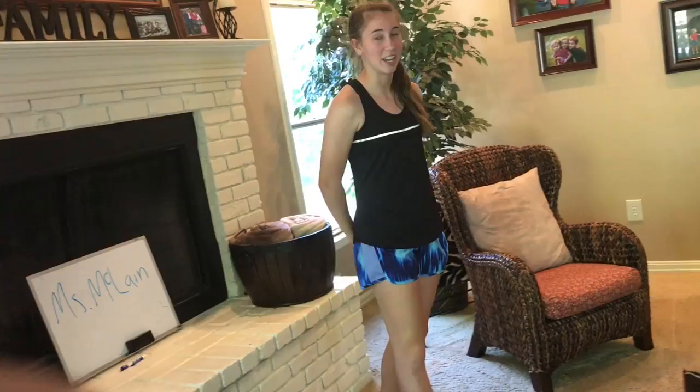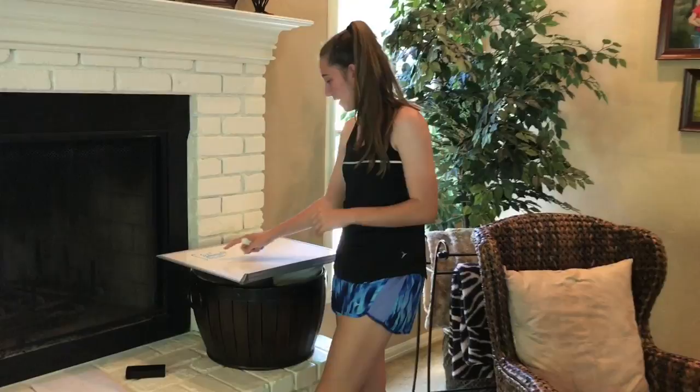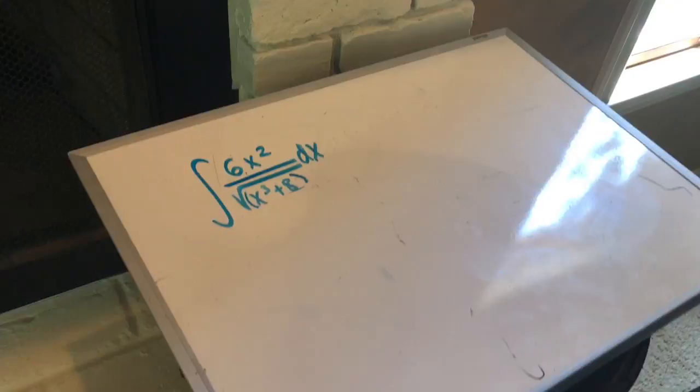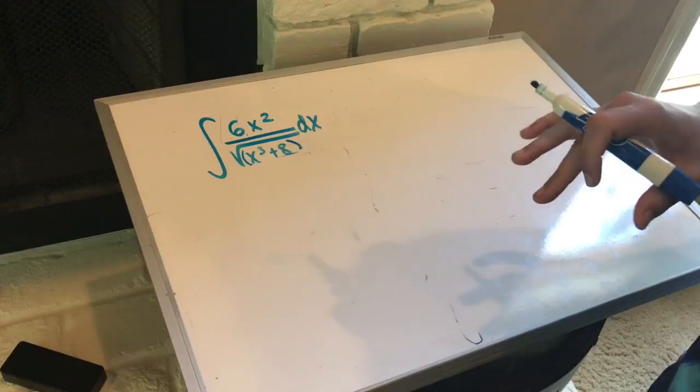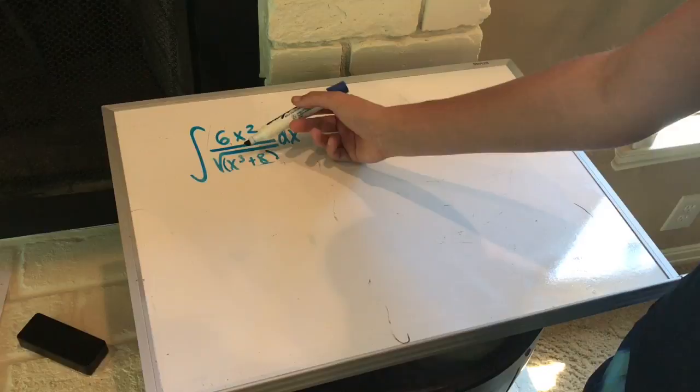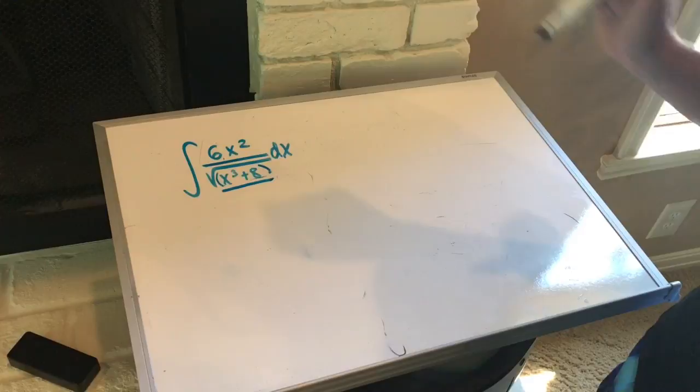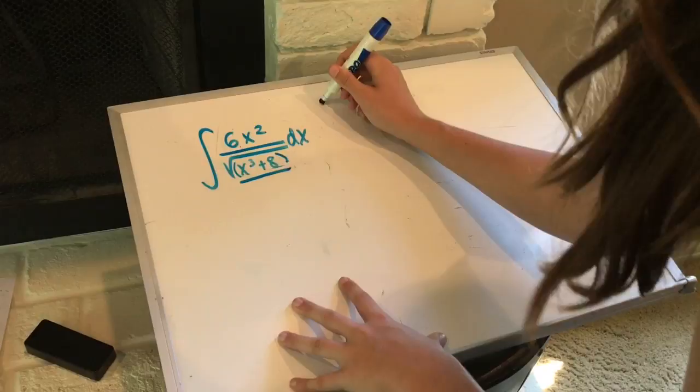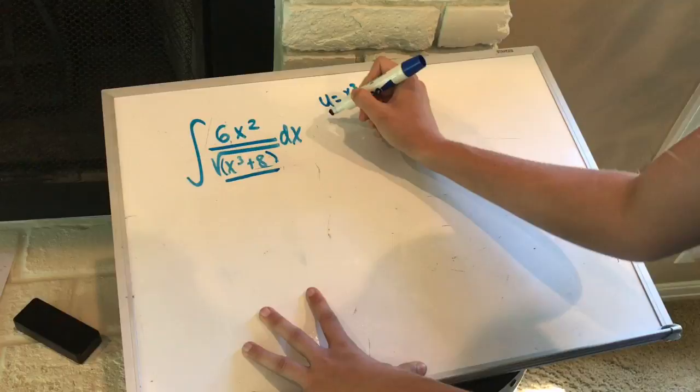Alright, now I know this looks scary, but we're just going to work through it step by step. Alright, so first we have to establish what our u is going to be. Now, we want our u, the derivative of our u, to be something already in the equation. So, we can kind of tell that this should be our u, because one, it's inside a square root, and also, it could potentially get us x squared. So, we're going to set our u equal to x cubed plus 8, and then we're going to find the derivative. So, du equals, we're going to bring the 3 to the front, so 3x, and then go down a power, squared, dx, alright.